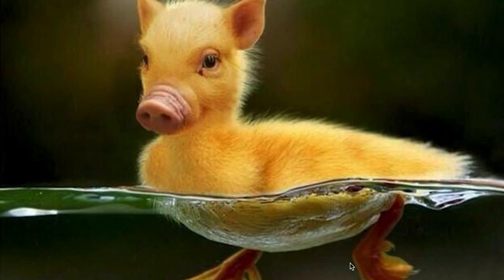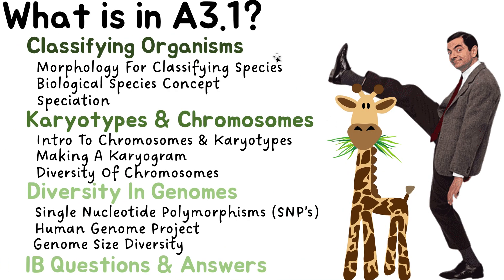What's up everybody? In this video we're going to be talking about diversity of organisms. This is in chapter A3.1. At the end I always have some IB questions and answers which will really help you test yourself and see if you understand the key things. These are past paper questions, not something I make up, so I really encourage you to try them.